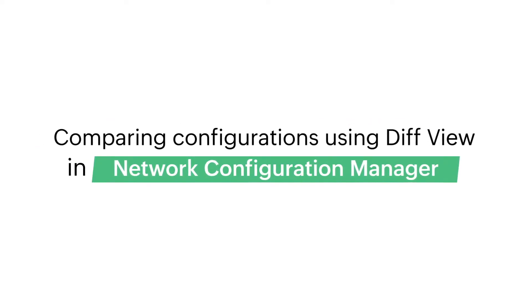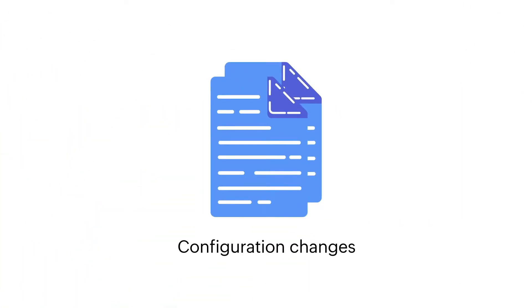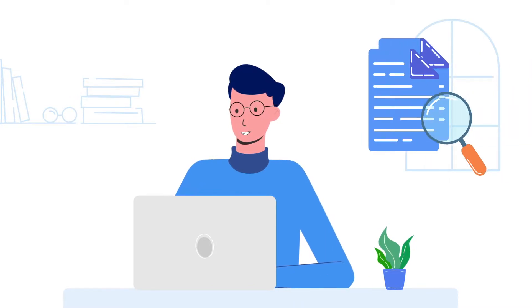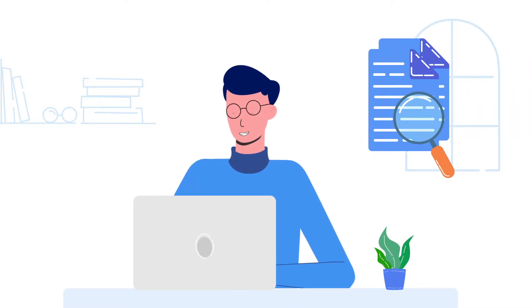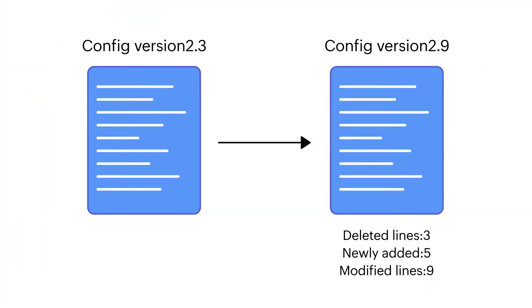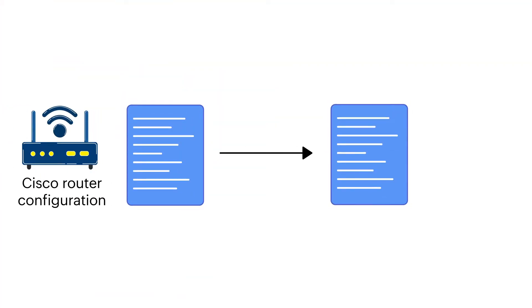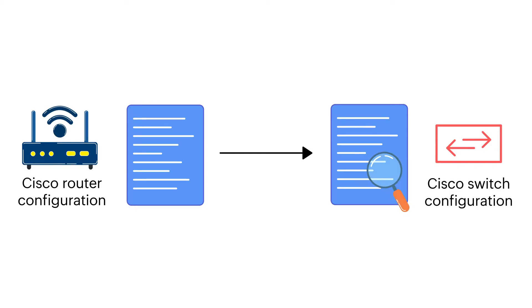Comparing configurations using DiffView in Network Configuration Manager. Whenever configuration changes are made, the network admin has to run through each line of a configuration file to identify the changes. DiffView simplifies this process with its configuration comparison functionality by providing side-by-side comparisons of configuration files. With the help of DiffView, you can compare different versions of the same device, or compare different devices' configurations. Let me show you how you can compare configurations using DiffView in Network Configuration Manager.